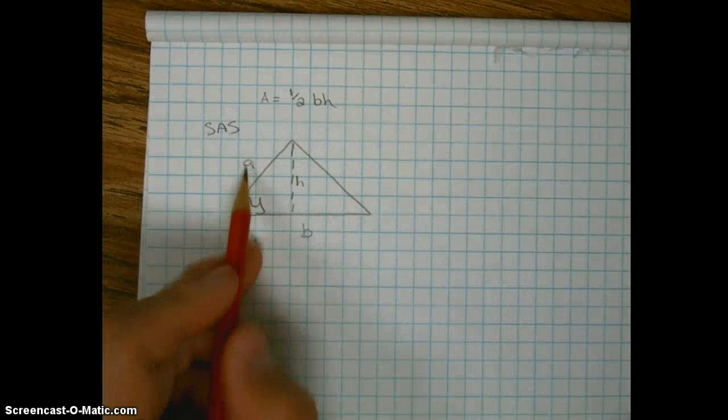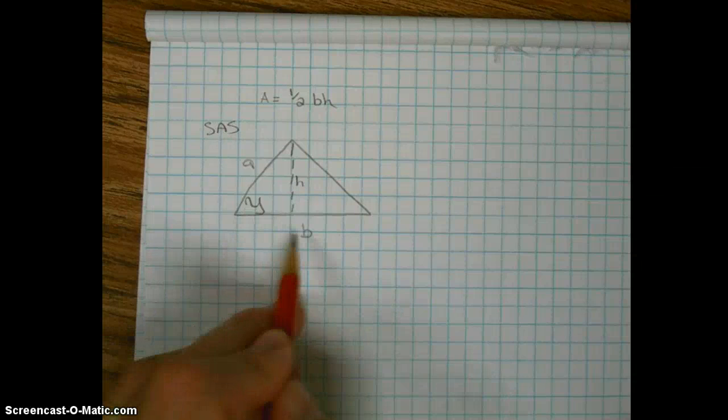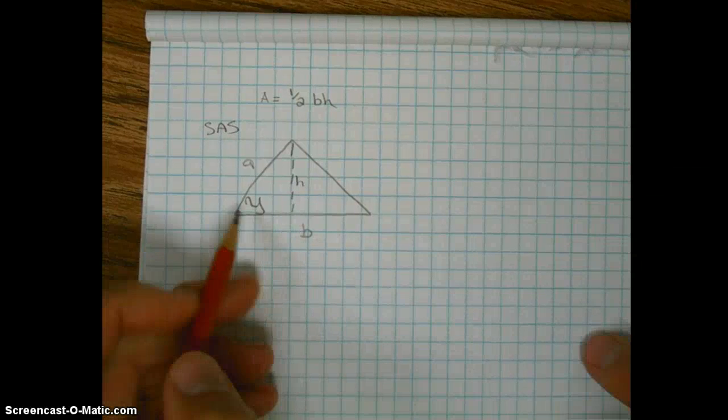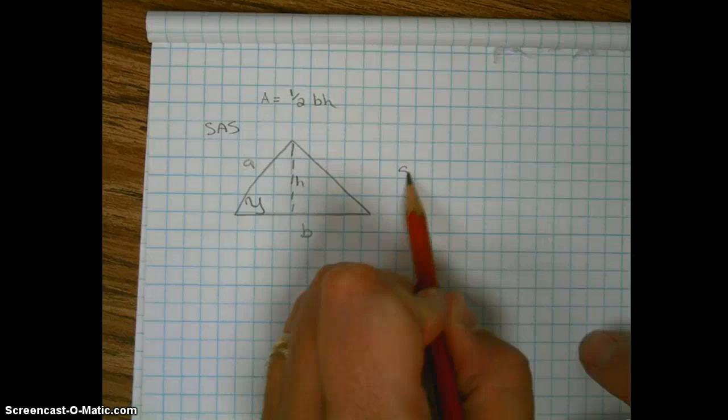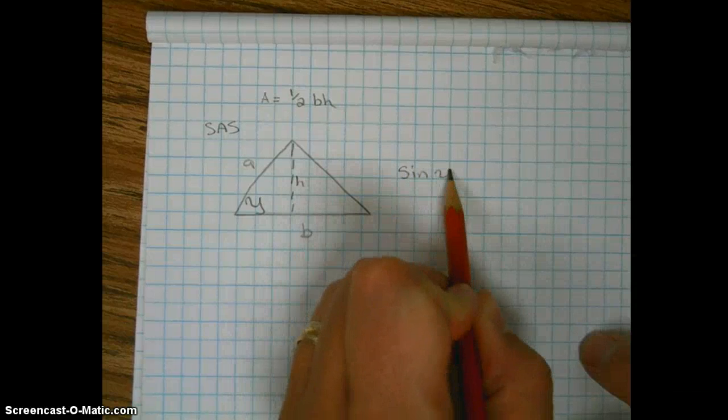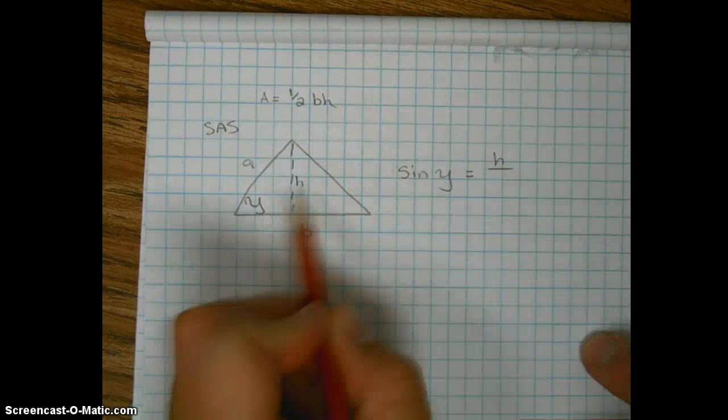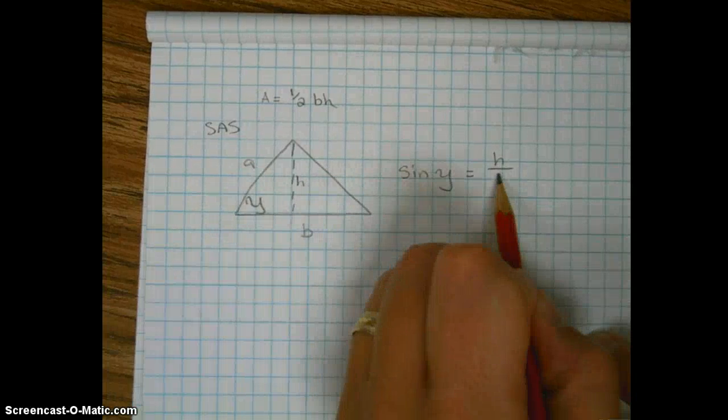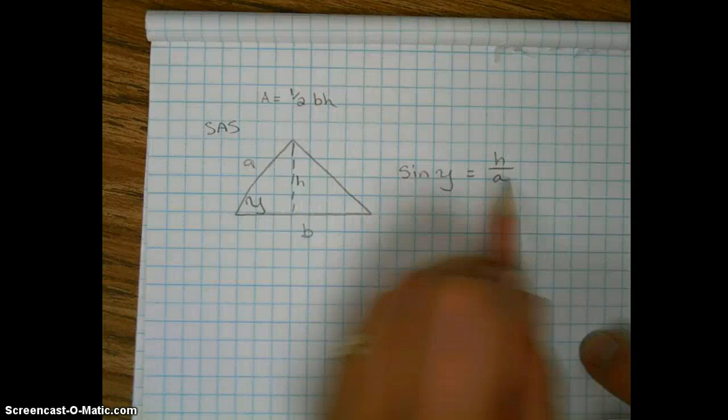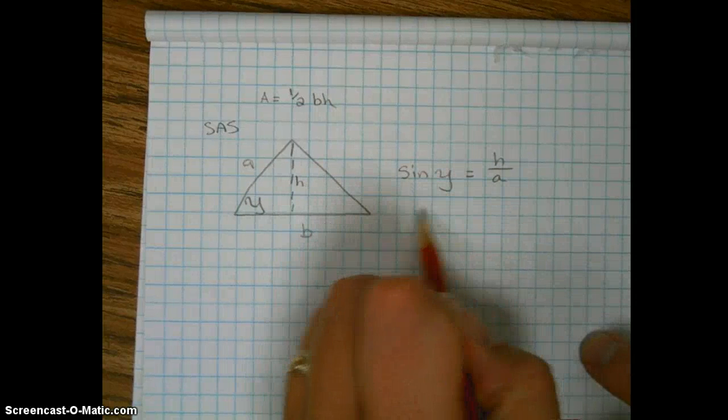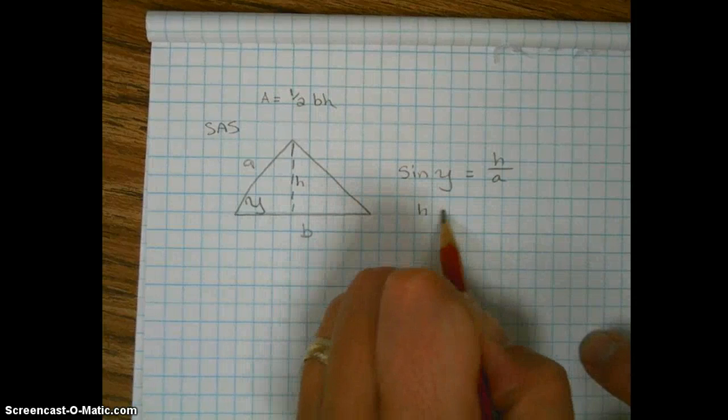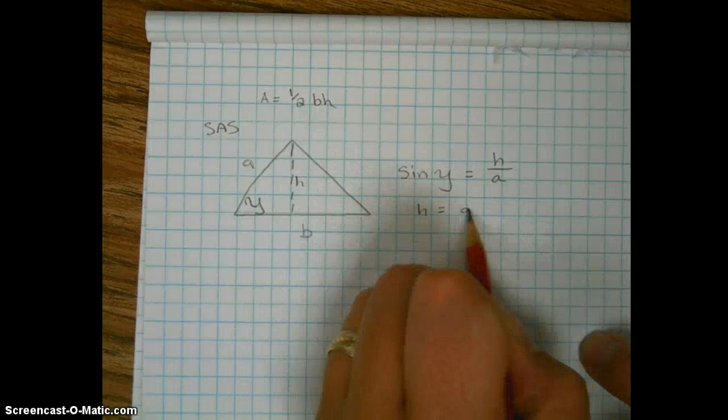So we're given A, we're given gamma, we're given B. So what we want to do here is we're going to take the sine of gamma which is going to be equal to the height, opposite over the hypotenuse. Then we're going to solve this for H. So H is going to be A times the sine of gamma.